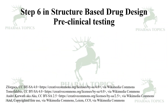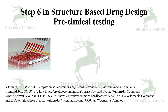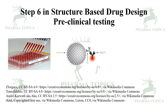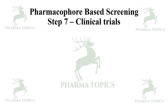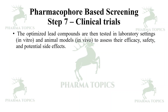Preclinical testing involves cell-based assays, enzymatic or microarray technologies, and preclinical testing in Drosophila, zebrafish, rodent models, or human primates. The next step is clinical trials. The optimized lead compounds are tested in laboratory settings — in vitro or in vivo models — to assess their efficacy, safety, and potential adverse effects before proceeding to clinical trials.